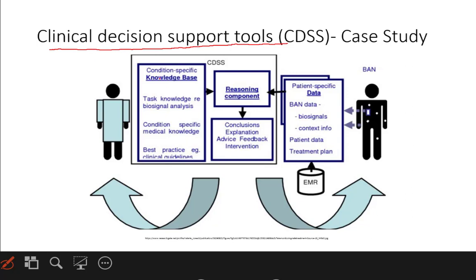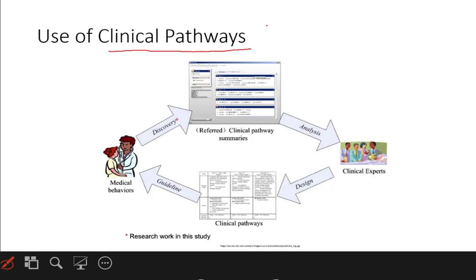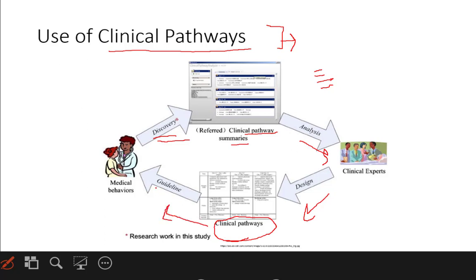Clinical decision support tools are a slightly newer concept in nursing. These tools work by having certain knowledge built in — task knowledge and specific disease conditions in the system — along with patient-specific data. The system suggests explanations, gives feedback, and recommends interventions, saving time in managing a particular patient based on symptoms and existing knowledge. It is more objective. Clinical pathways are disease-specific: you analyze recurring patient types, design a pathway for managing them, and it turns into a guideline that improves over time with feedback.